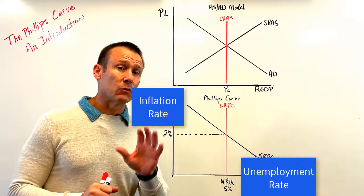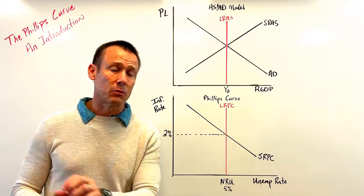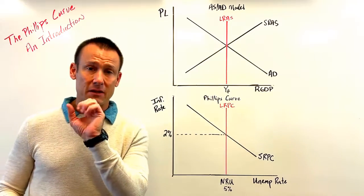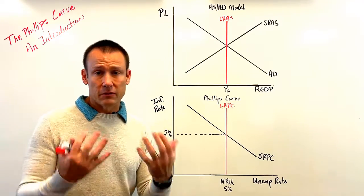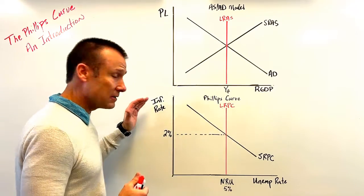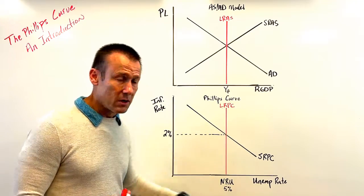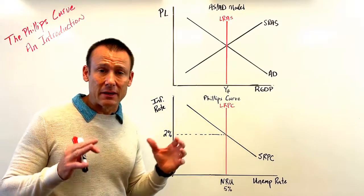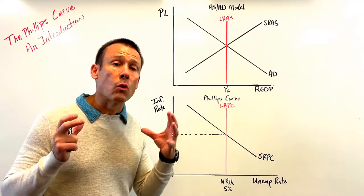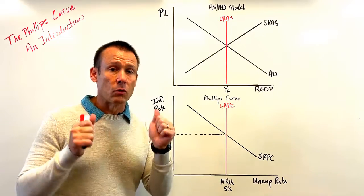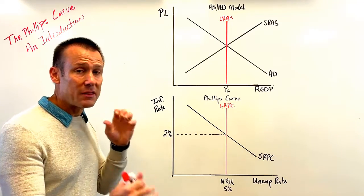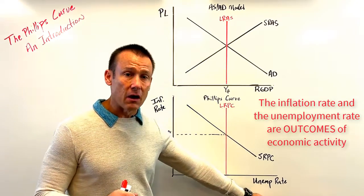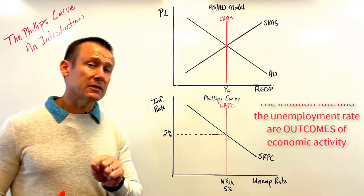We're looking at the macroeconomy and specifically these two variables — the inflation rate and the unemployment rate — and how they relate to each other. The axes of the Phillips Curve are the inflation rate and the unemployment rate. Some students end up putting something like the interest rate on an axis, which doesn't make sense. The Phillips Curve is specifically about these two outcomes of our macroeconomic activity.